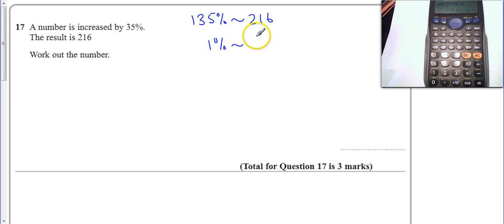So like we did earlier in the paper, I'm going to work my way down to 1% and allow me to get back to the original number. So here, I'm going to divide by 135, and here, I'm going to times by 100.